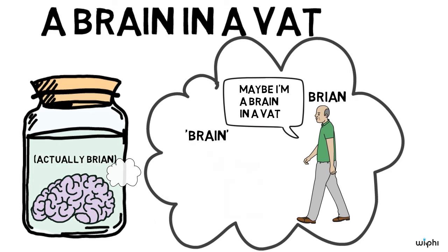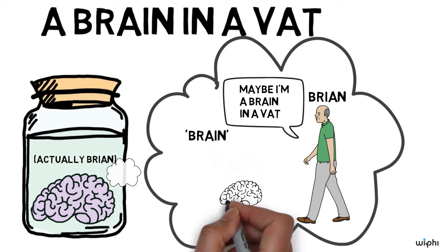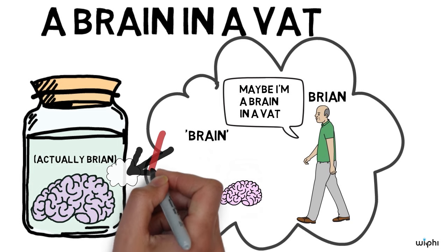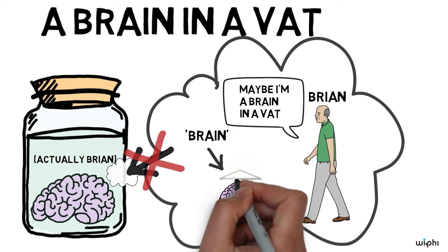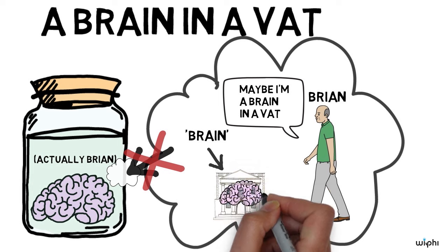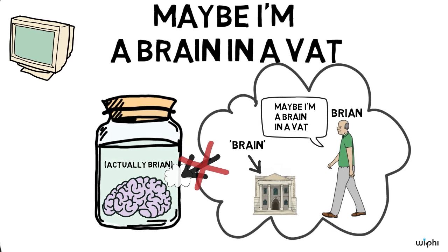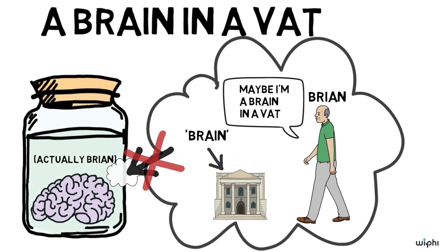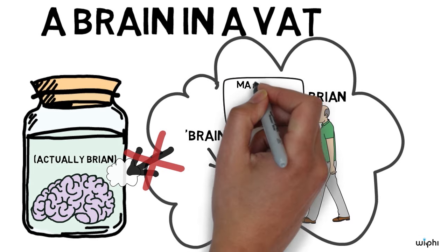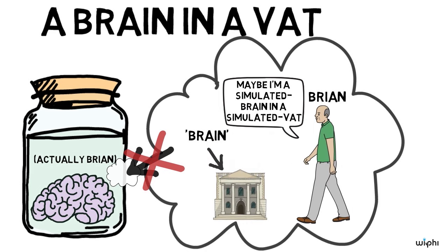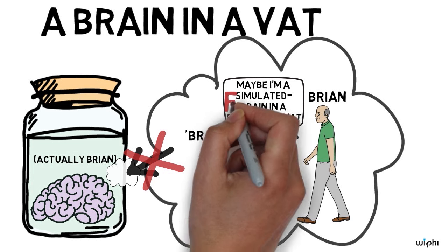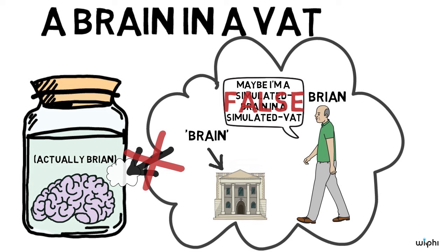Likewise, Brian's word 'brain' doesn't mean a physical organ with real blood vessels and tissue — he's never encountered one of those inside his simulation. When he's used the word 'brain,' he's been encountering elements in his computer-generated virtual reality. That anatomy museum he remembers visiting is really just a pattern of sensations electronically generated by the computer he's hooked up to. Brian has no access to physical brains or vats. Stuck inside his virtual reality, he can only experience and use words to pick out elements of that environment. According to Putnam, Brian doesn't have the semantic resources to describe or understand the situation he's in.